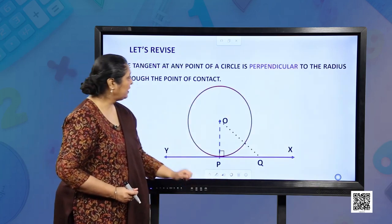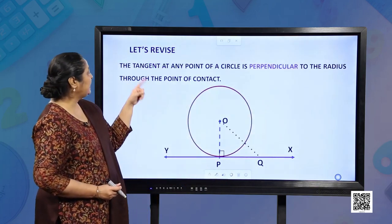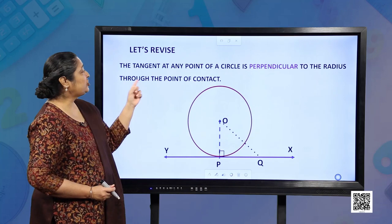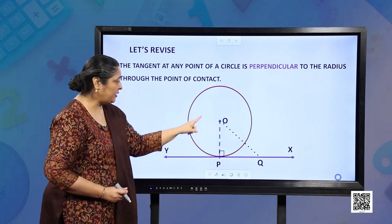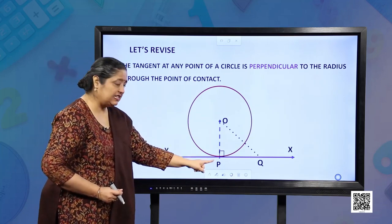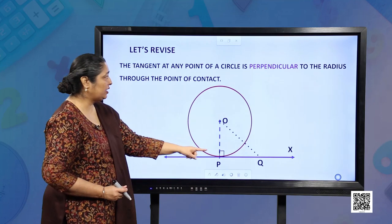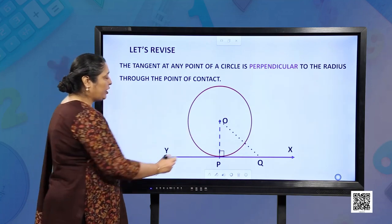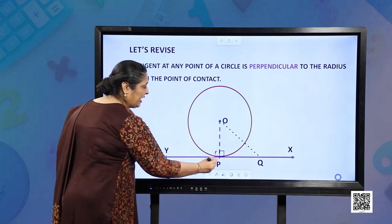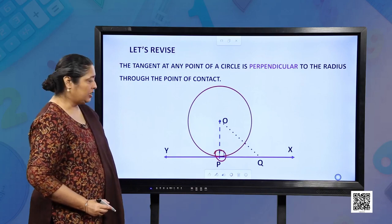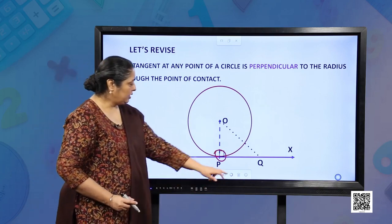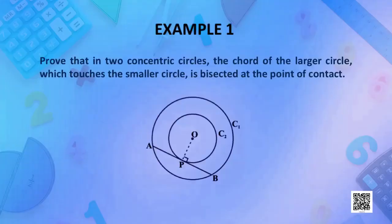Second, the tangent at any point on the circle is perpendicular to the radius through the point of contact. This is a 90 degree angle. So let us move forward. We have some examples to do now.